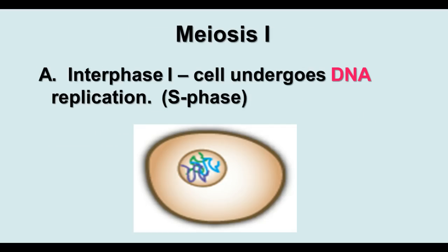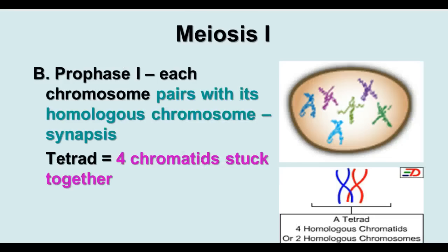In meiosis I, the cell undergoes a normal-seeming interphase with DNA replication in the S phase, set up much like mitosis. In prophase I, each chromosome pairs up with its homologous chromosome — this is called synapsis. You end up with four homologous chromatids, or two homologous chromosomes. As long as they are attached at the centromere, they are still one chromosome. They pair up in a group of four chromatids called the tetrad.